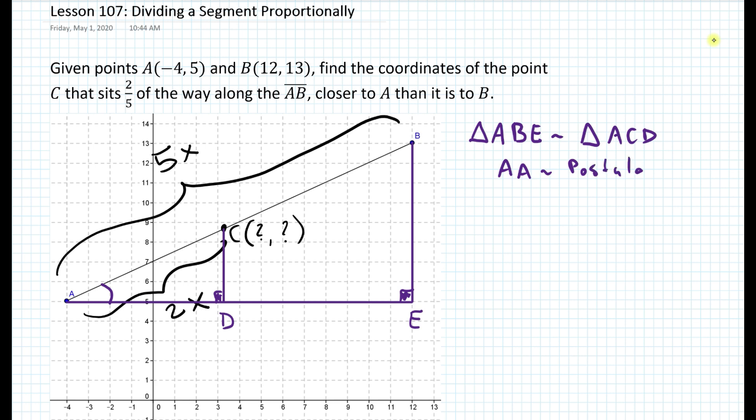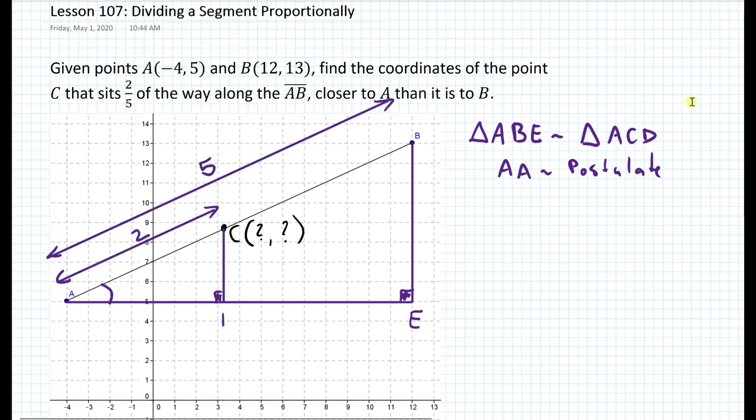At this point, we can now generate a proportion. First, let's rewrite the length of AC to be 2 and the length of AB to be 5.